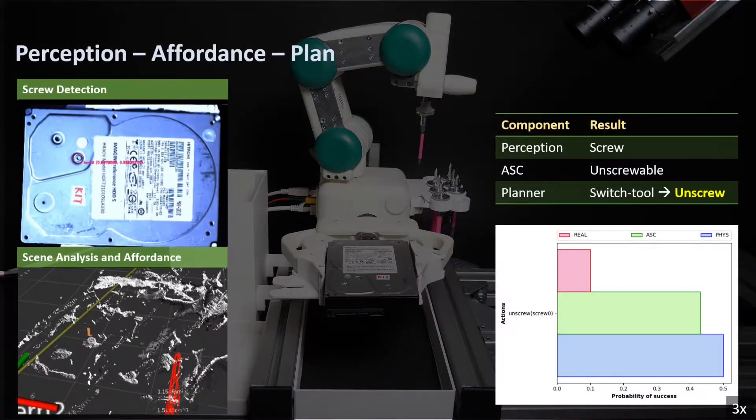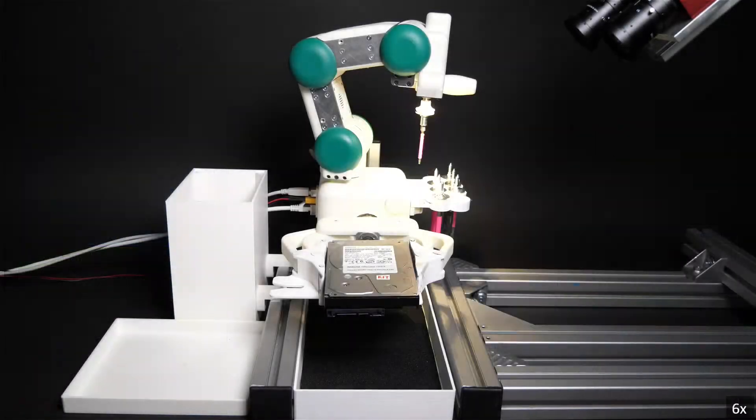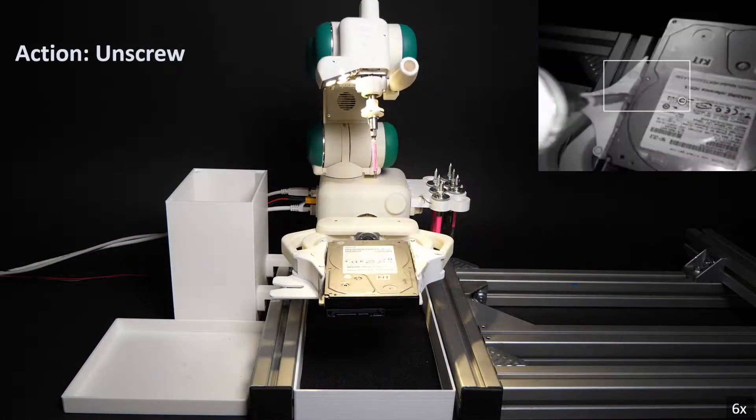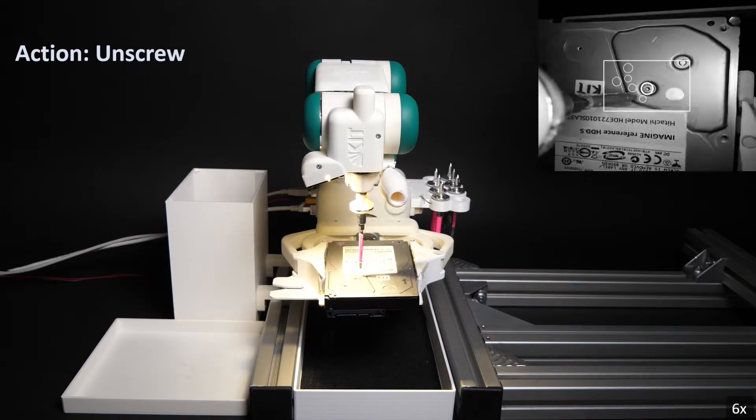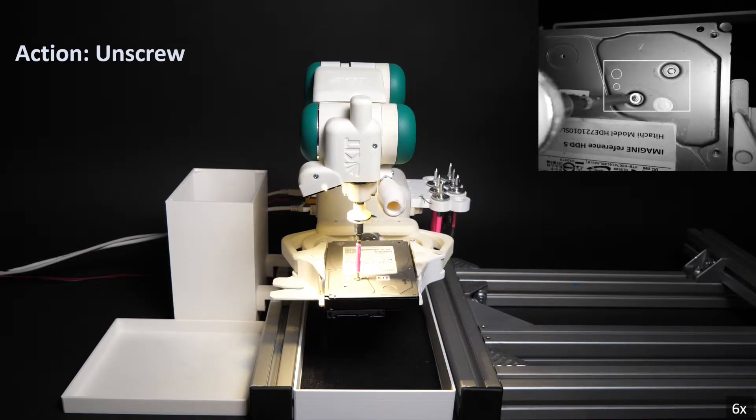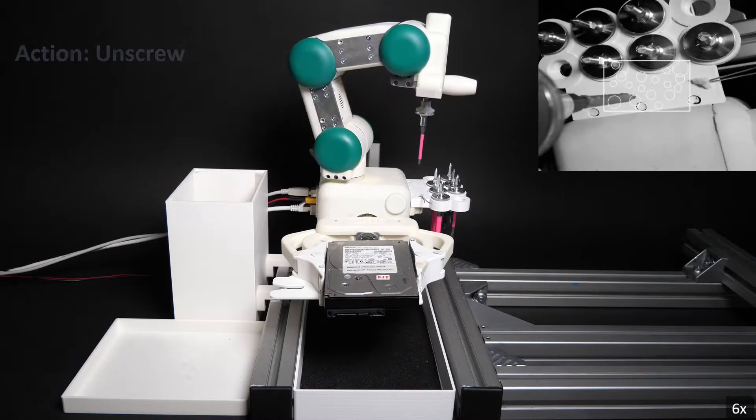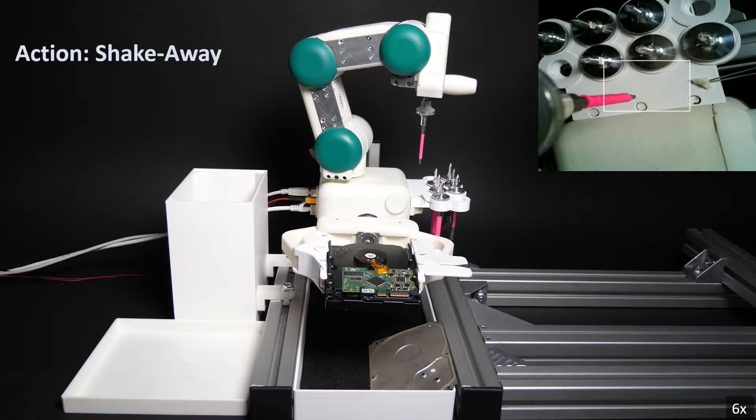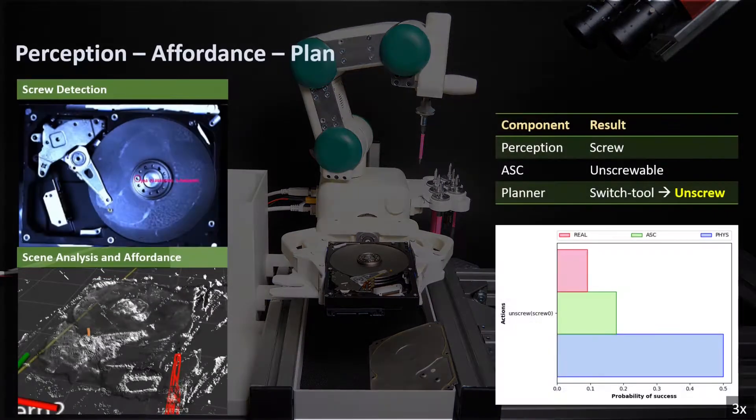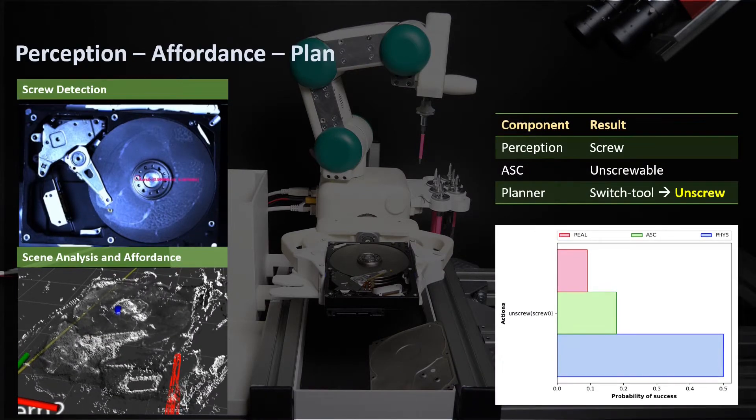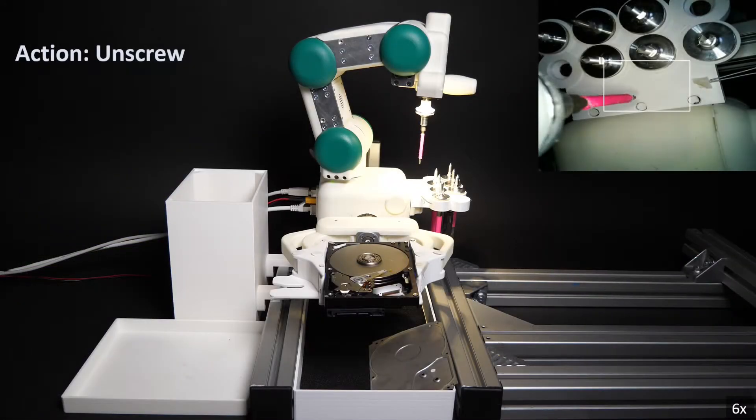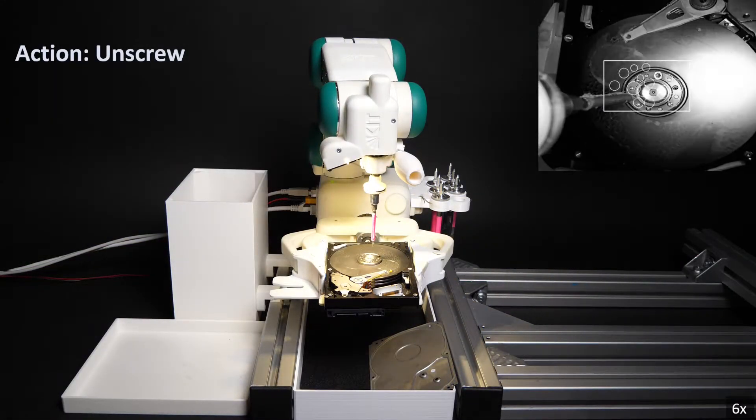Our system can recognize the failure case and re-plan based on the new scene analysis. The system decides to continue the process with another unscrew action. Under the new scene, a screw of the same type as the previous one is detected on the platter, so the equipped screwdriver on the robot can be used for this unscrew action.